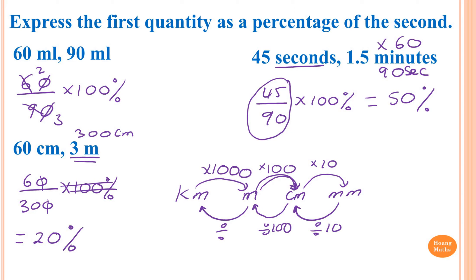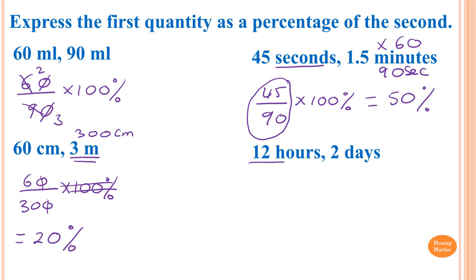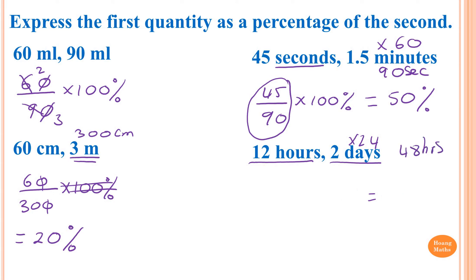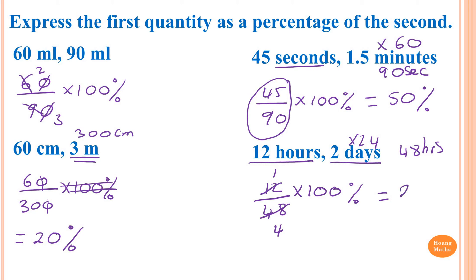12 hours and 2 days — different units, so convert days to hours first. One day equals 24 hours, so 2 days equals 48 hours. Now we just go 12 over 48 times by 100 percent. Dividing both by 12 gives 1 over 4, which is a quarter — 25 percent. Otherwise just put everything in the calculator: the answer is 25 percent.